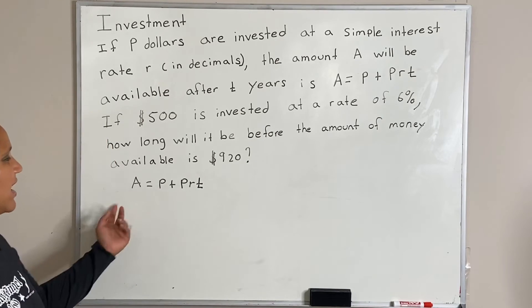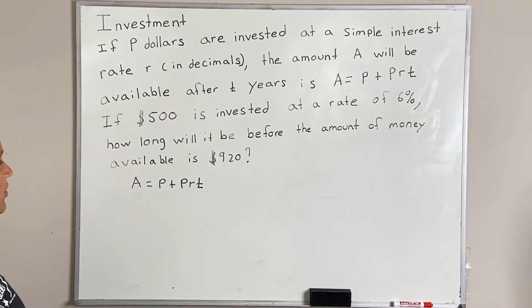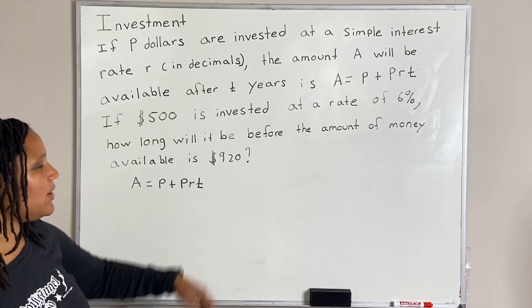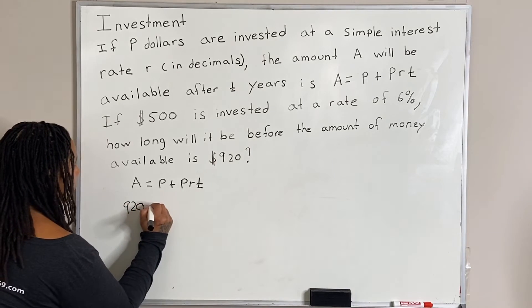Now let's identify what A is, what P is, what R is, and what T is. Okay, so now we are given A, which is 920. So I'm going to go ahead and plug in 920 for A.